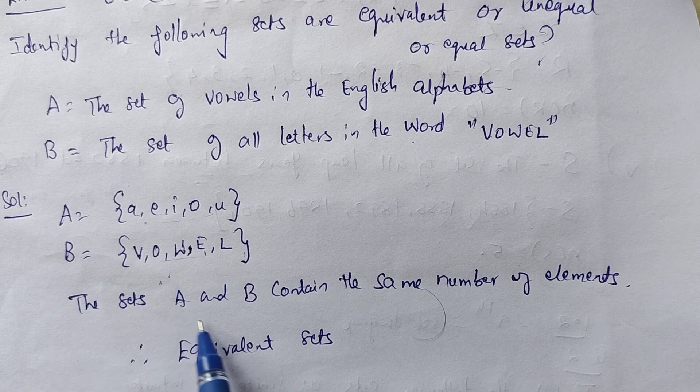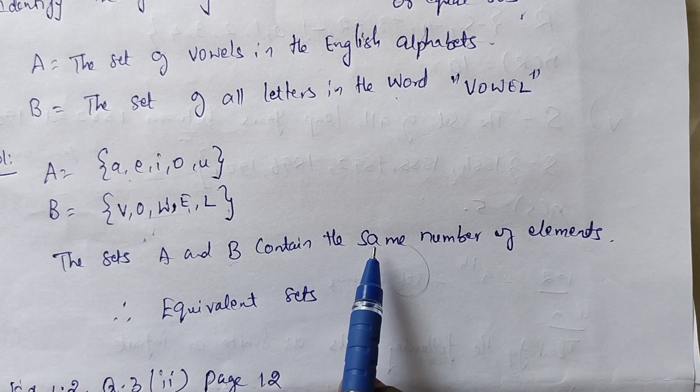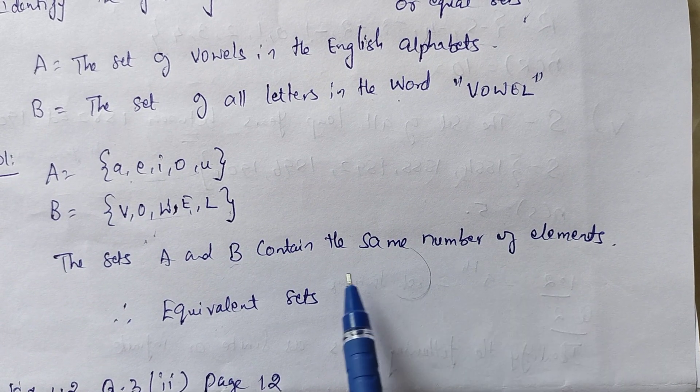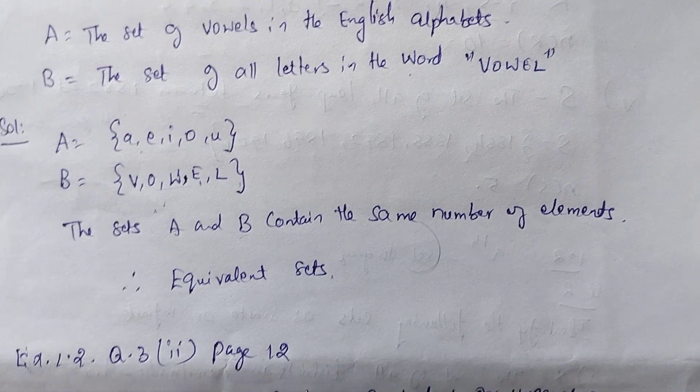Same number of elements. So the sets A and B contain the same number of elements. Therefore, it is an equivalent set.